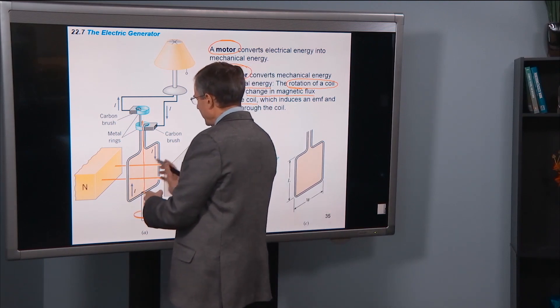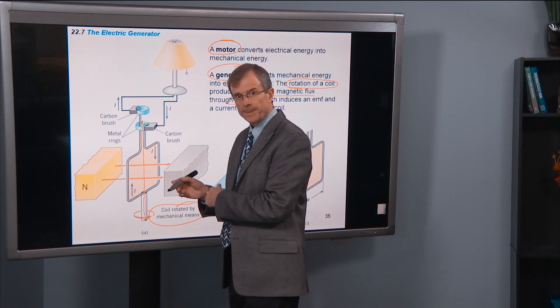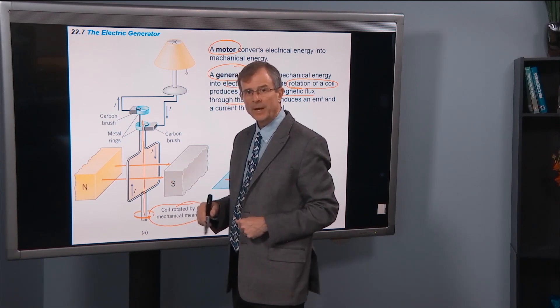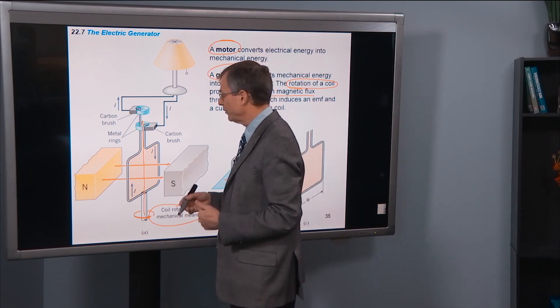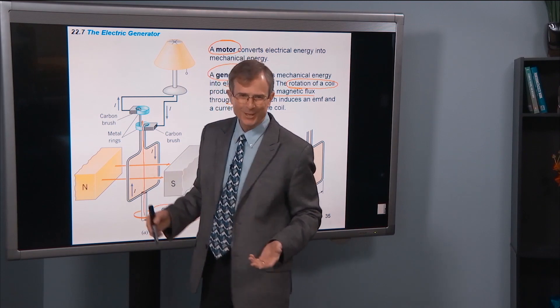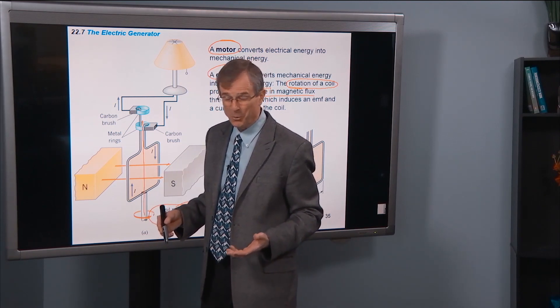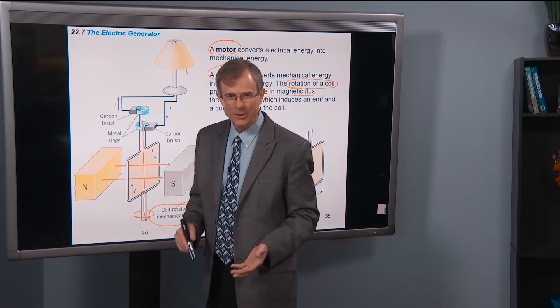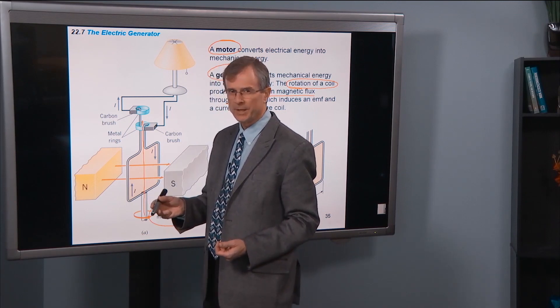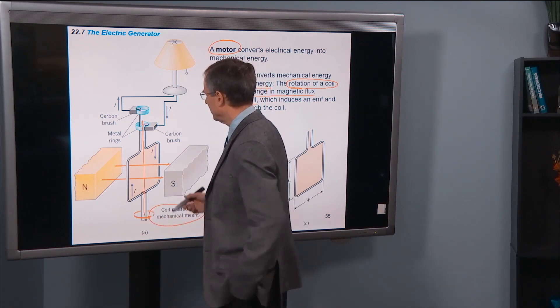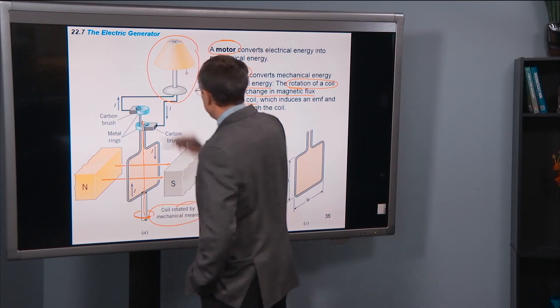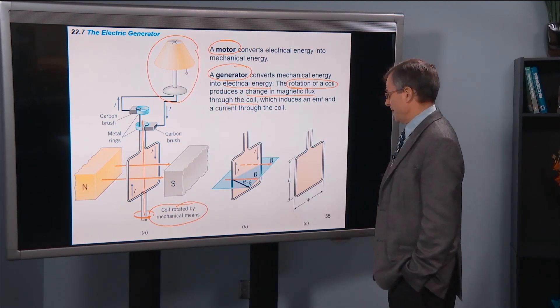So we're thinking about some external agent that turns this coil of wire about this axis, and then it's going to be in the presence of a magnetic field, say between the north and south poles of a horseshoe magnet. And that changes the flux through this wire. Through Faraday's law, it changes the magnetic flux through the coil, and there's an EMF and a current generated in the coil, which you can use to power your lamp.